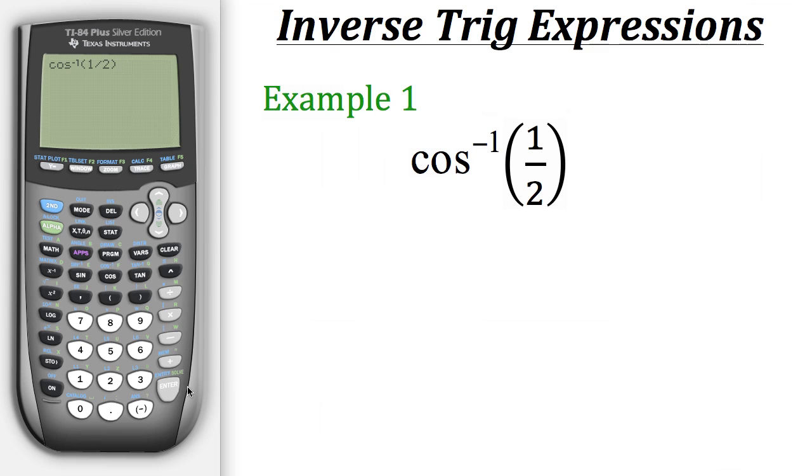Now before hitting enter, you need to make sure that the calculator is in the mode that you want it in. For example, if you want your angle measure to be in degrees, then your mode needs to be in degrees. But if you want a radian measure for your angle, then make sure that the mode is in radians. For us, we're just going to keep it simple and have it in degree mode.